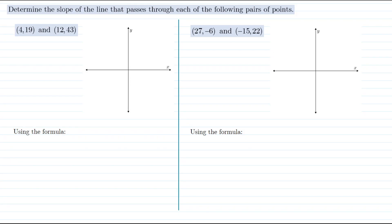In each of these problems we're given two points and we need to find the slope of the line that passes through those two points. We'll do that using two different approaches: one using a sketch of a graph and the other using the slope formula.